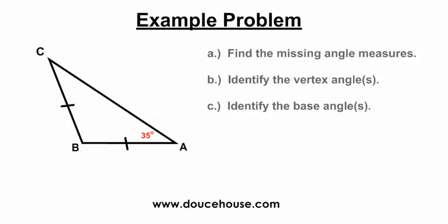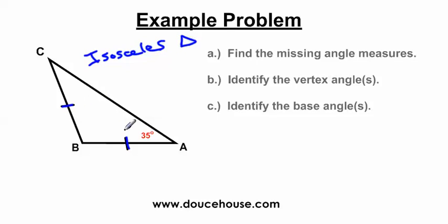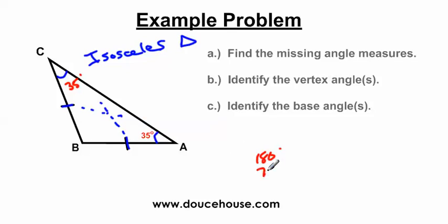Now let's do an example problem: find the missing angle measures. First, I need to figure out what kind of triangle this is. I've got one tick mark here and one tick mark here, so this is an isosceles triangle. Since these two sides are congruent, the angles opposite those sides are congruent — these are the base angles. So if angle A is 35 degrees, then the other base angle is also 35 degrees. Since all three angles in a triangle add up to 180 degrees, I do 35 plus 35 equals 70, then 180 minus 70 equals 110. So angle B is 110 degrees.